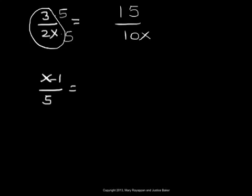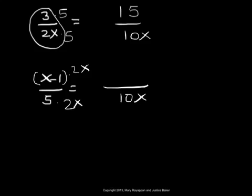Therefore, 3 over 2x is now equivalent to 15 over 10x. Similarly, x minus 1 over 5 is rewritten with 10x as its denominator. We multiply both numerator and denominator by 2x, so the denominator becomes 10x and the numerator becomes 2x squared minus 2x, obtained by applying the distributive rule.